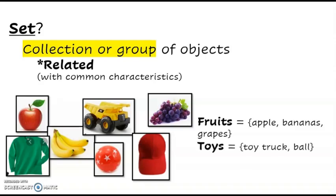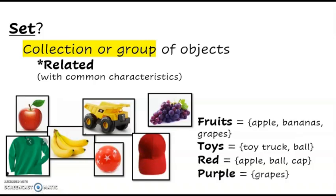The set of toys. We have the toy truck and the ball. How about the set of red objects? We have apple, ball, and cat. How about the objects that are purple? We only have one and that's grapes.